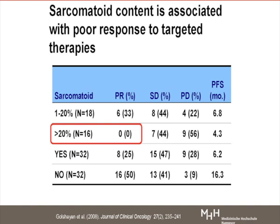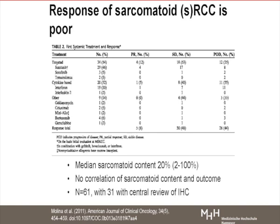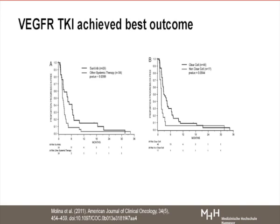There is some data looking into sarcomatoid content showing a difference — in progression-free survival it's about 6 versus 16 months. In one analysis, once sarcomatoid tissue is beyond 20 percent, outcome is poor. However, in a different analysis with a mixed therapy population dominated by sunitinib, median sarcomatoid content was about 20 percent, and while there is response to sunitinib, the rest of the curve is difficult to judge because of the mixed therapies applied.